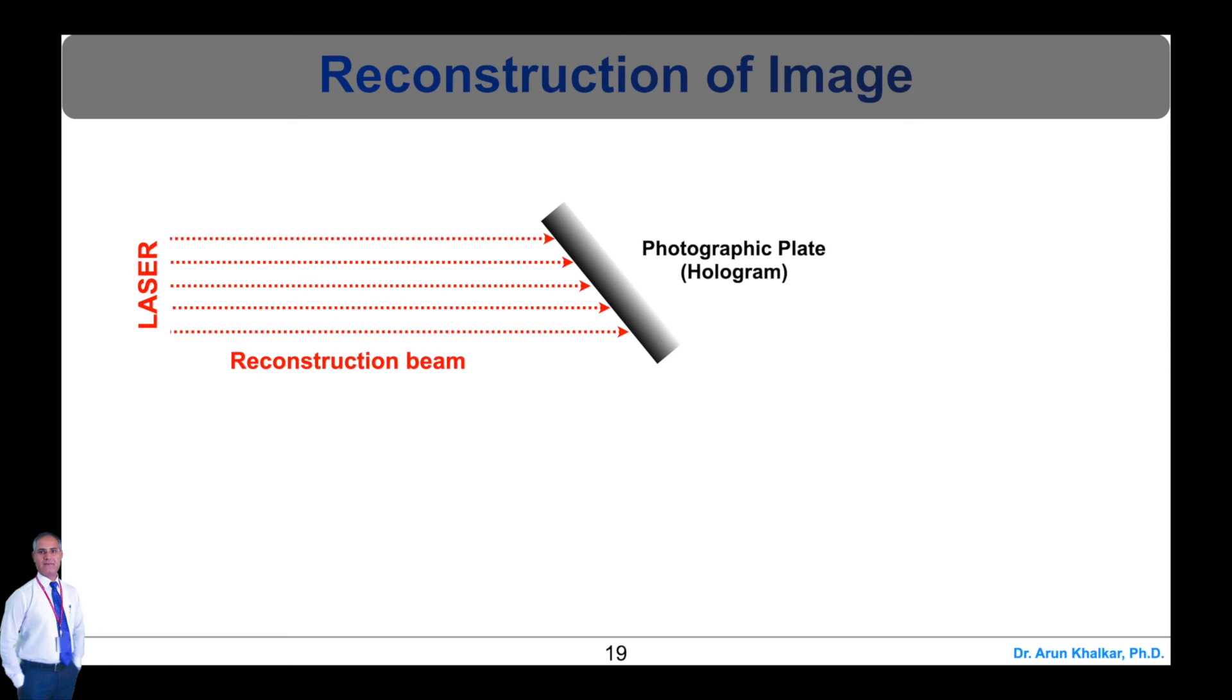The hologram acts as a diffraction grating. This reconstruction beam will undergo phenomena of diffraction during the passage through a hologram. The reconstruction beam after passing through the hologram produces a real as well as a virtual image of the object, as shown here in this diagram.